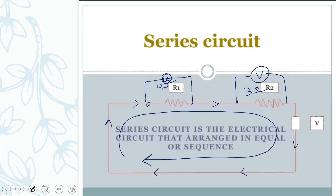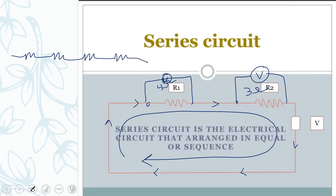The resistances are arranged in series — meaning they sit beside each other, connected in one wire, with only one path. They are arranged in sequence, which is the meaning of 'series.' They have different voltages because they have different resistances.